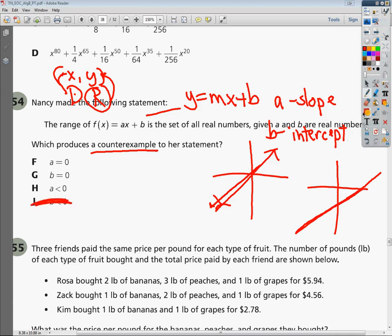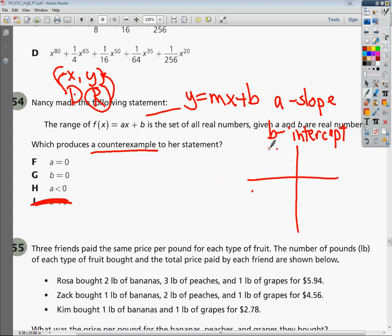a being less than zero. So in this case, what happens if my slope is less than zero? Well, every graph I've ever done, if my slope is less than zero, it just means it's a negative slope, so it just goes down. Still gets me all the way to the top and the bottom, depending on what number I punch in for x. I get the corresponding y to be whatever I want. So a being less than zero doesn't matter.